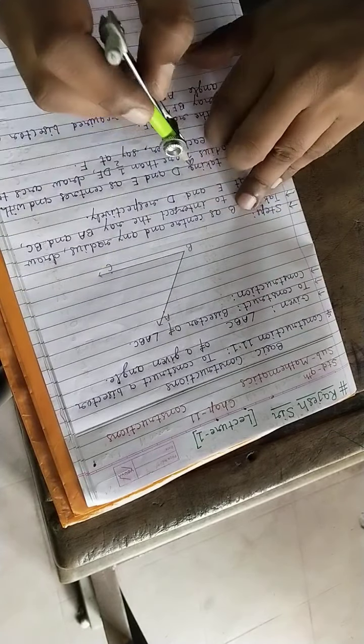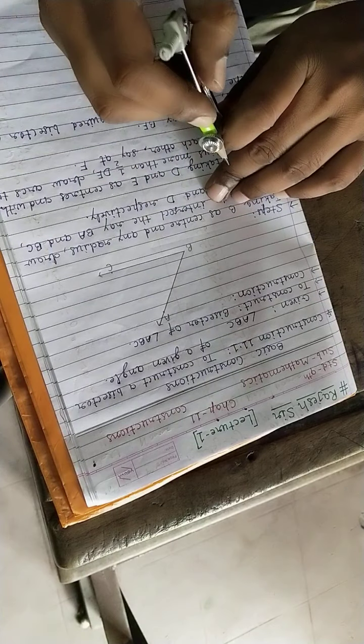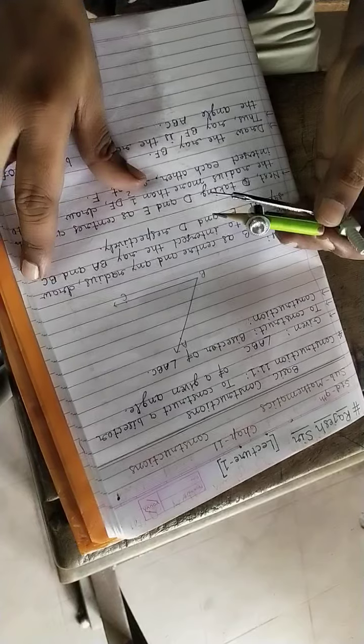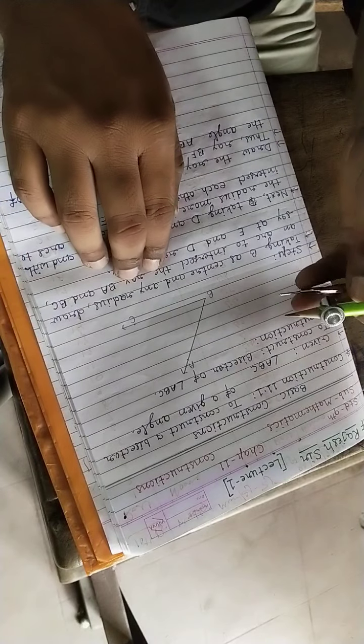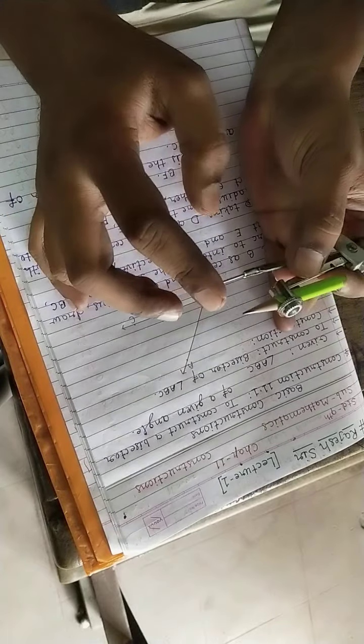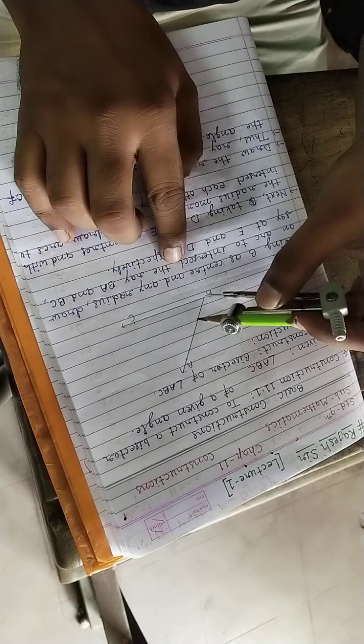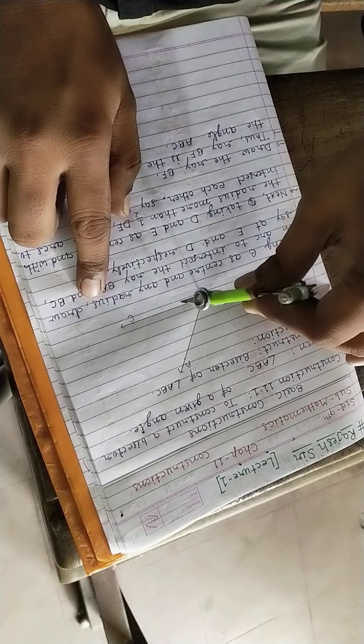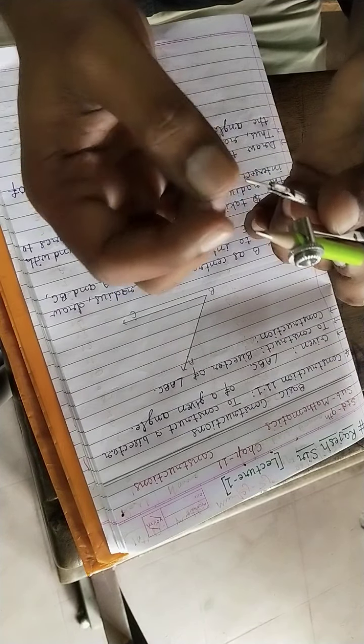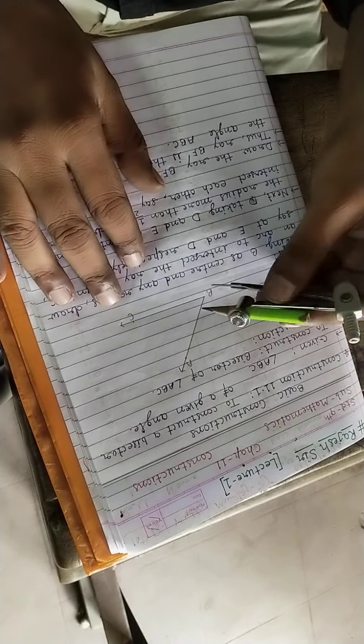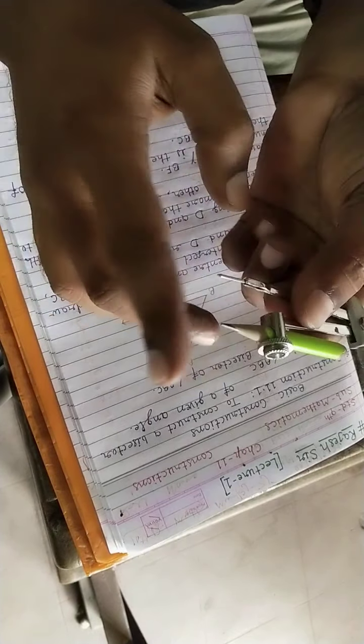Now we start step by step. This is the given angle. We want to draw the bisector. First step: we have to take the center as B. Center as B means our rounder point we have to take on point B. And any radius - you can take any radius. The distance between the rounder point and pencil point is called radius. We take any radius. I am taking this much radius.